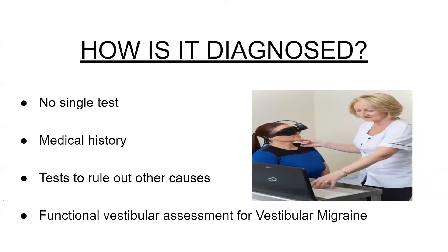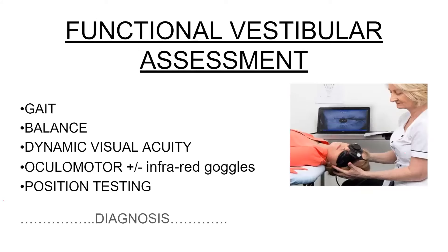There is no single test for migraine. Diagnosis is based on a combination of a detailed medical history — all the different symptoms, family history, and so forth — giving you a very good idea of where you're going. After that, it's important to rule out other causes of the symptoms. The most effective way of establishing vestibular migraine is functional vestibular assessment. This is a very objective assessment — very black and white. The system is either working or it isn't, and somebody doesn't have to be suffering a migraine at the time of assessment; certain findings will still show up.